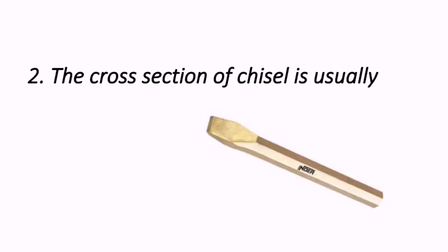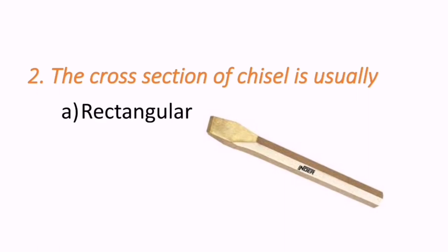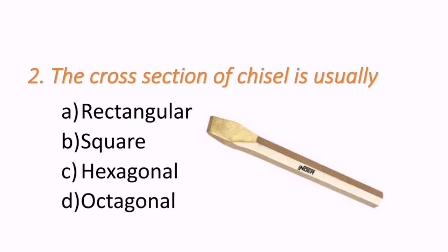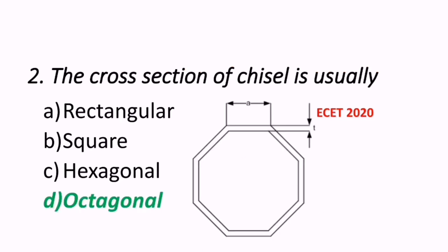Second question: the cross section of a chisel is usually what? If we cut the chisel in the middle, the cross section may be rectangular, square, hexagonal or octagonal. This question appeared in the ESET 2020 exam. The correct answer is octagonal — the cross section of a chisel is usually octagonal in shape.